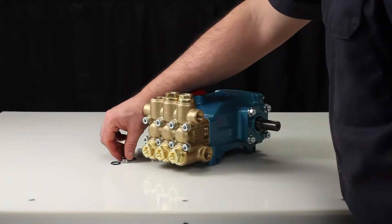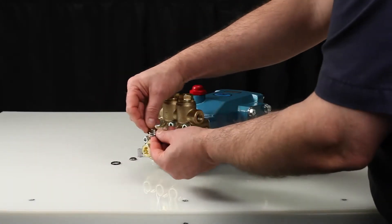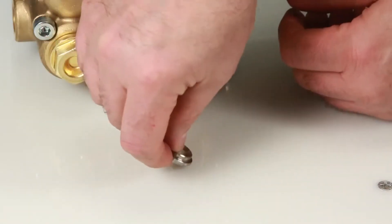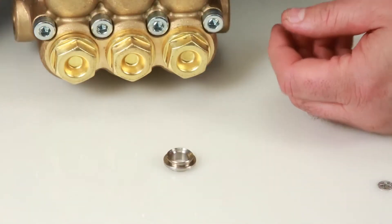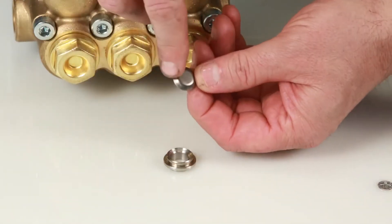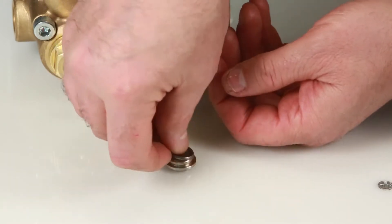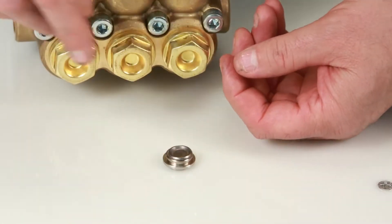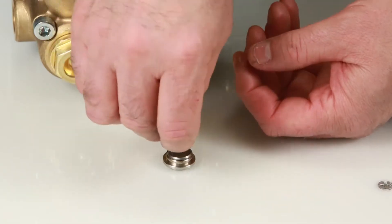To reassemble the valve assembly, place the valve seat on a flat surface with tapered surface facing up. Place valve onto valve seat with tapered surface facing down. Place the spring on the valve, followed by the spring retainer.